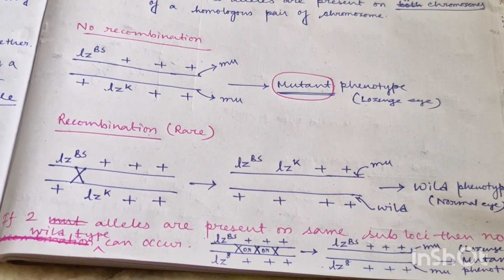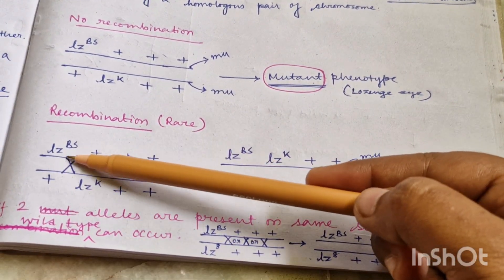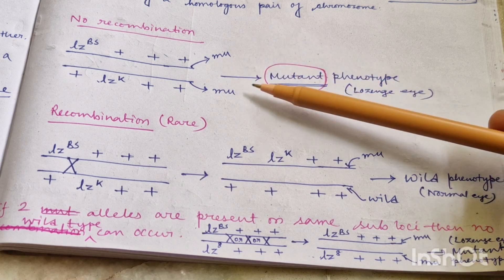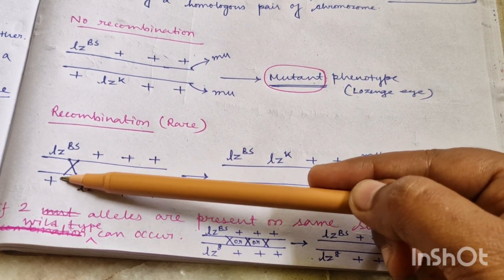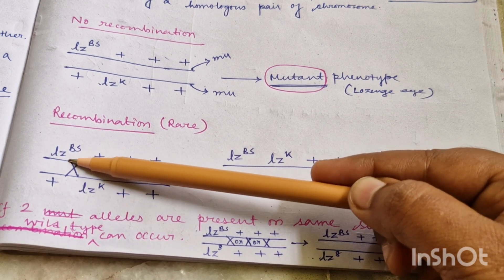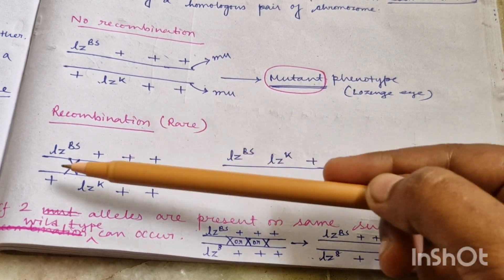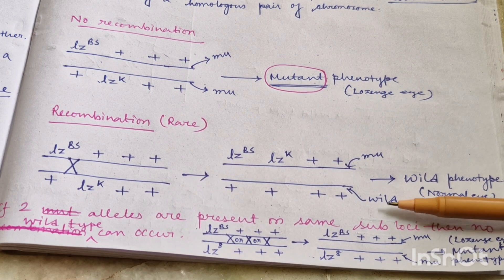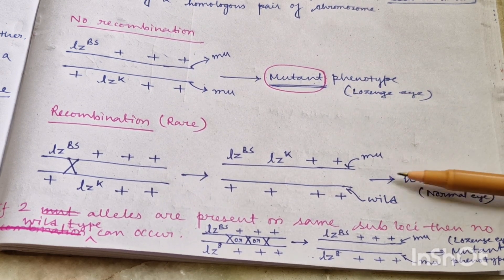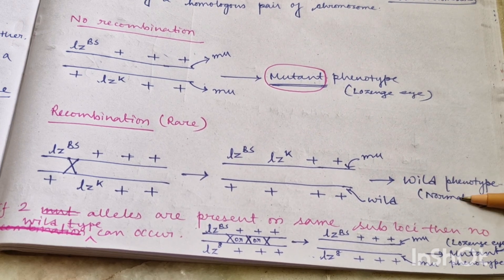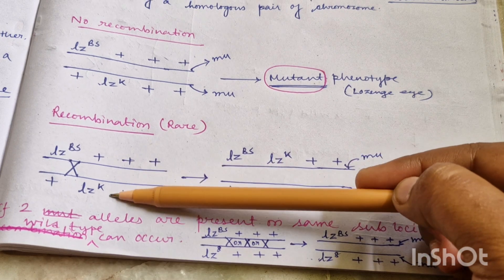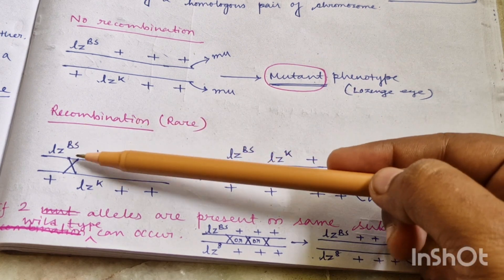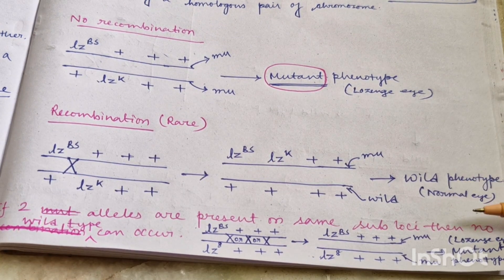In case of pseudoalleles, recombination is very rare. In case of no recombination in trans configuration, this chromosome will form a mutant product as it has a mutant allele, and the other will also form a mutant product. Overall mutant phenotype will be expressed — lozenge eye shape will be expressed. If recombination occurs between the two mutant alleles, one product will be LZBS LZK++ and another will be ++++++, giving one mutant type and one wild type product. Since wild type product is dominant, wild type phenotype or normal eye of Drosophila will be produced.